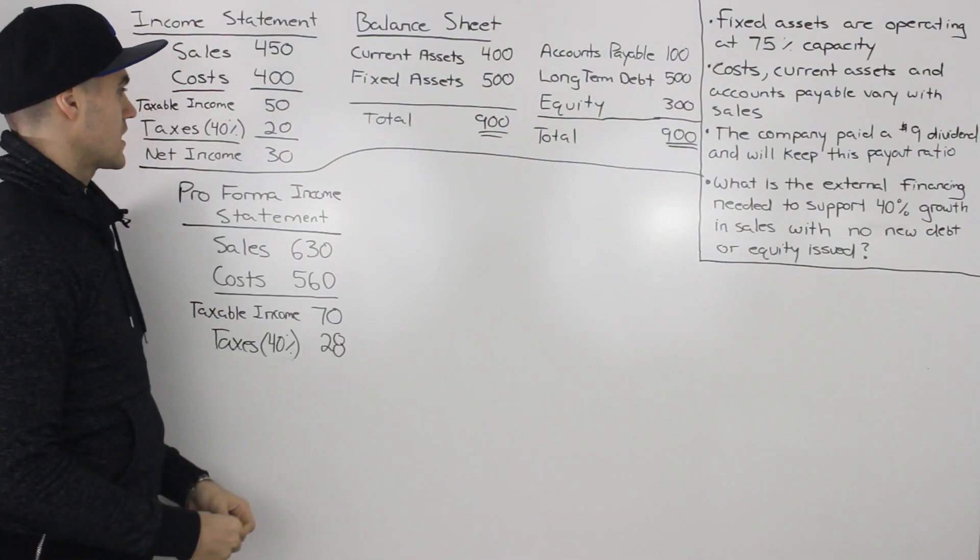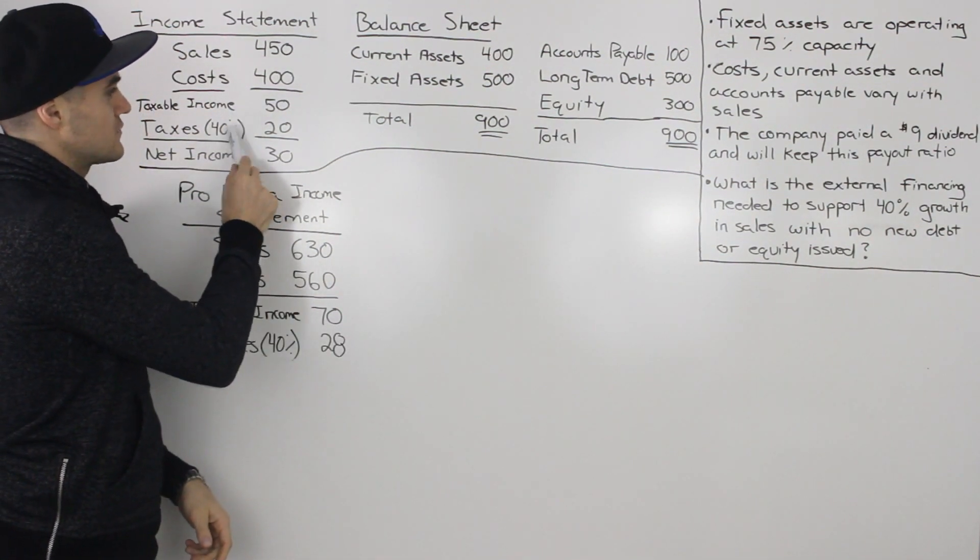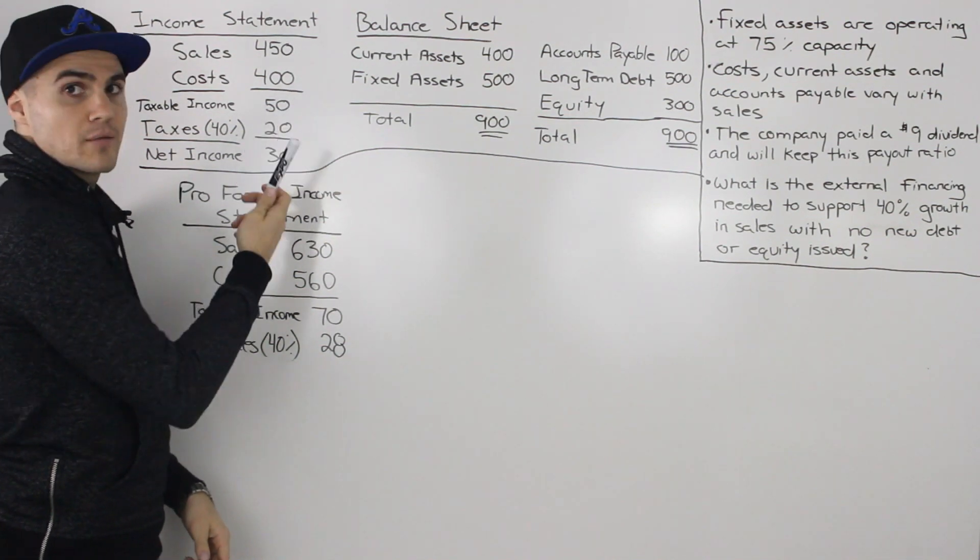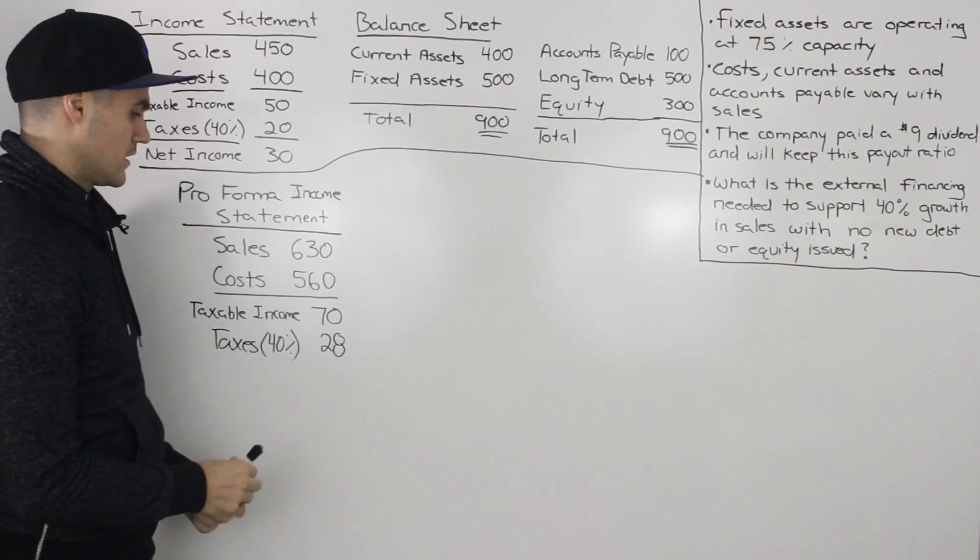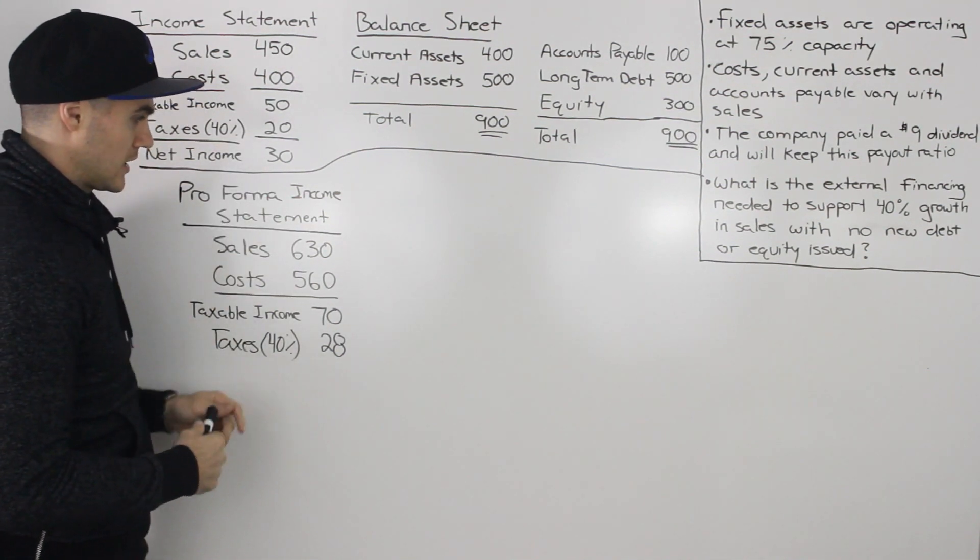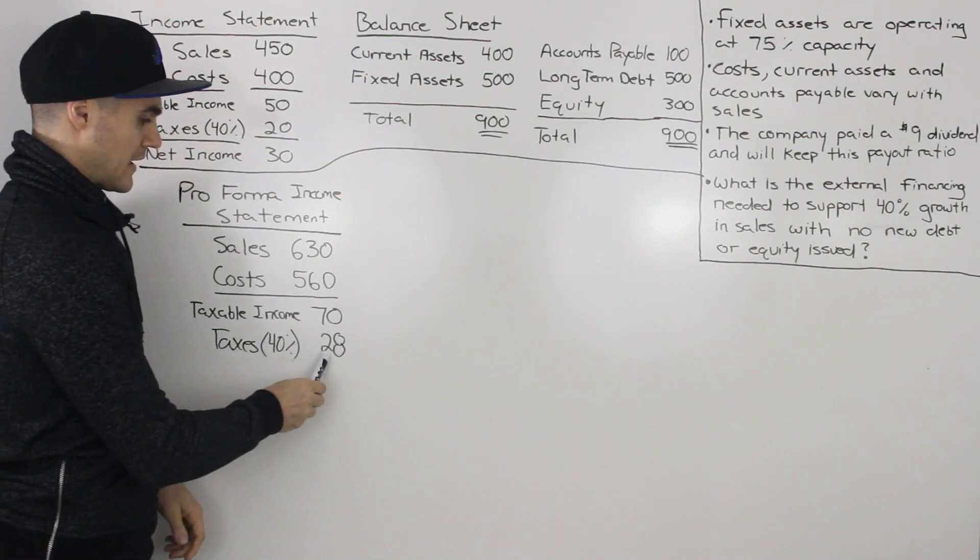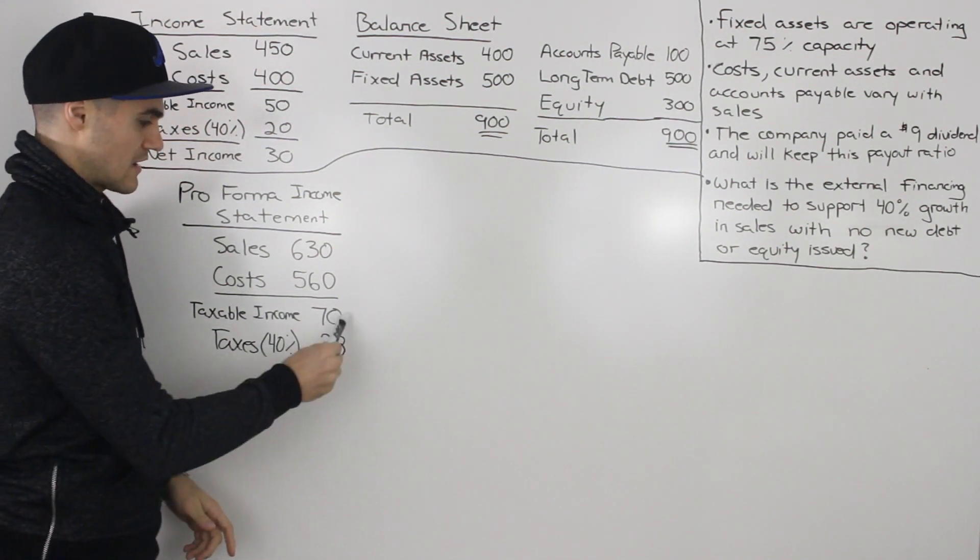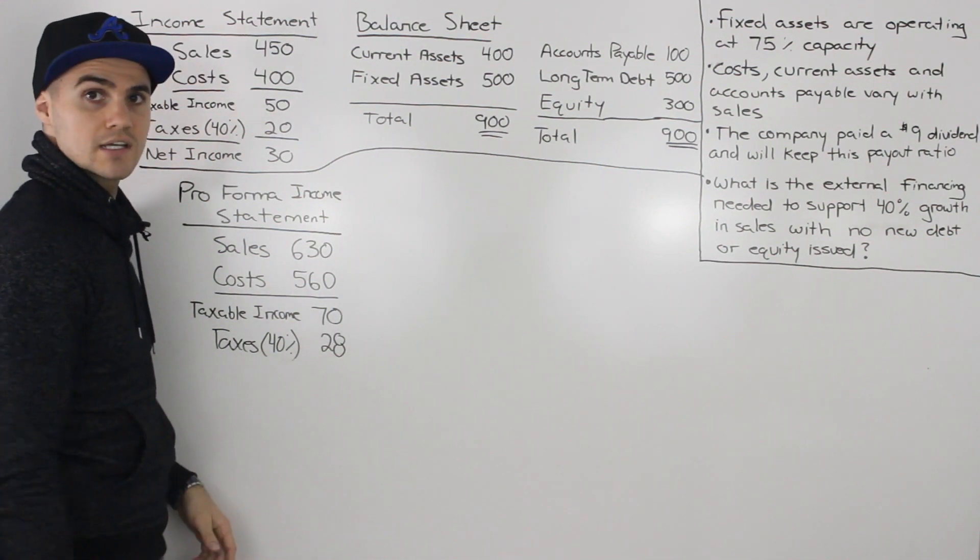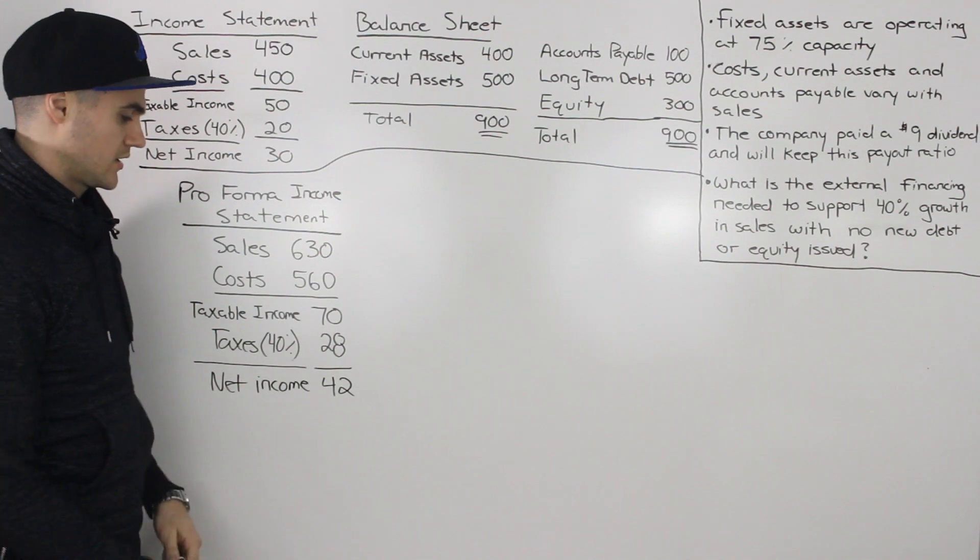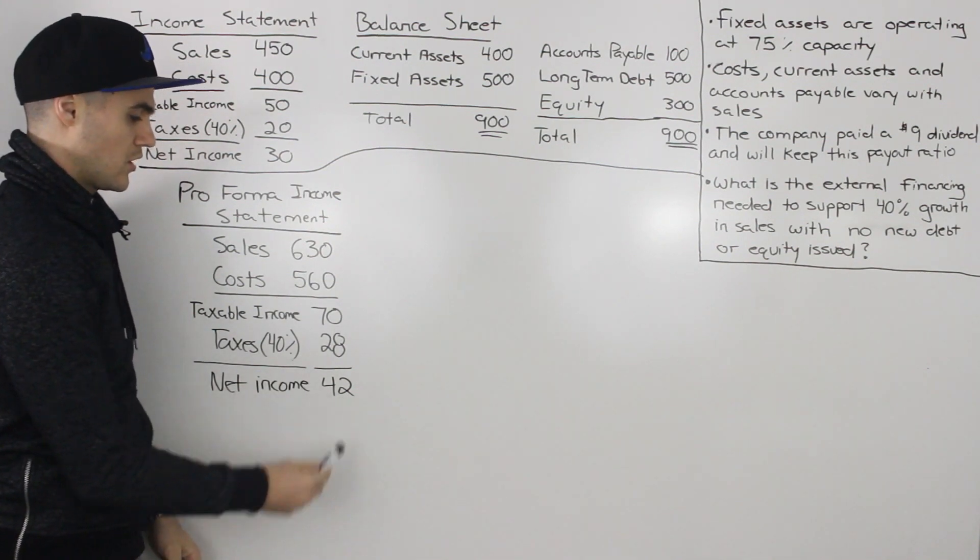Now, if you look at the original income statement, we can tell that we're paying taxes of 40% because 20 out of 50, if you divide both of those, you would get 0.4. So assuming that we're paying the same amount of taxes for the pro forma income statement, we would pay $28 worth of taxes on that taxable income of 70. 70 times 0.4 gives us 28. So then subtracting the taxes from the taxable income, we would get a final net income of $42.